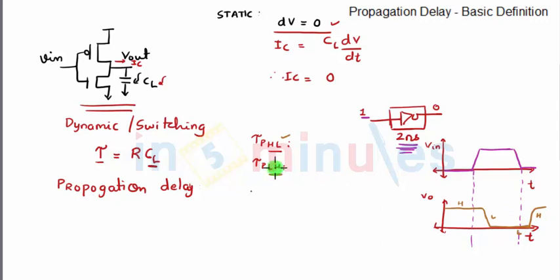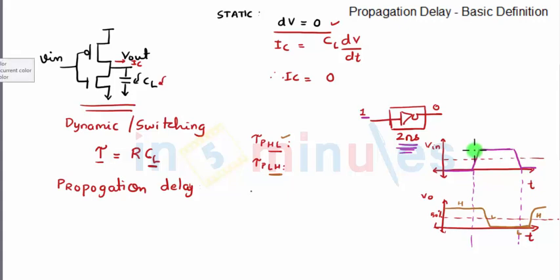Now let's understand exactly how we find propagation delay and what is its precise definition. Let's say this is the 50% point when the input has gone from low to high or high to low, and this is the 50% point when the output has gone from high to low or low to high. Propagation delay high-to-low is the delay between this 50% input point and this 50% output point. And the delay between this corresponding pair of points is propagation delay low-to-high.